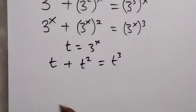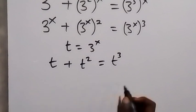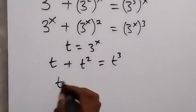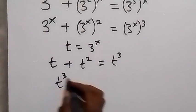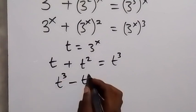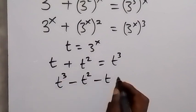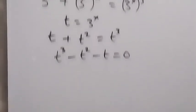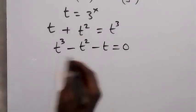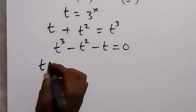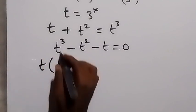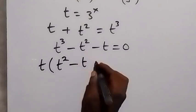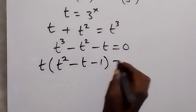From here we can take everything to one side, so this becomes t raised to power 3 minus t squared minus t equals zero. Then we can factor t out from here, so t times the quantity t squared minus t minus one equals zero.